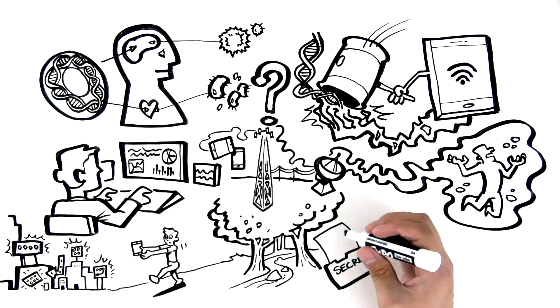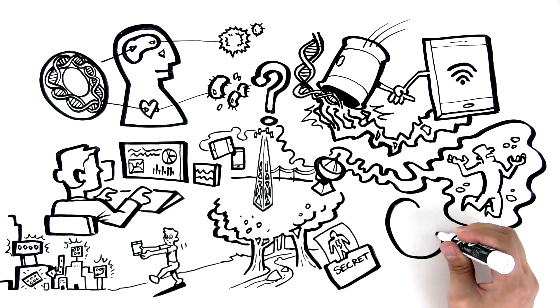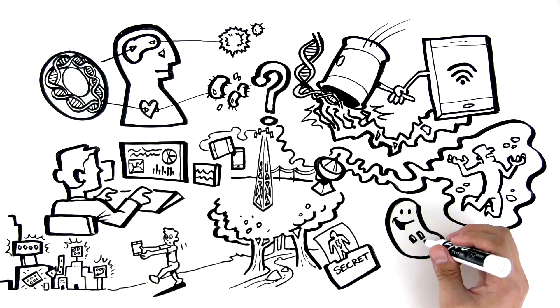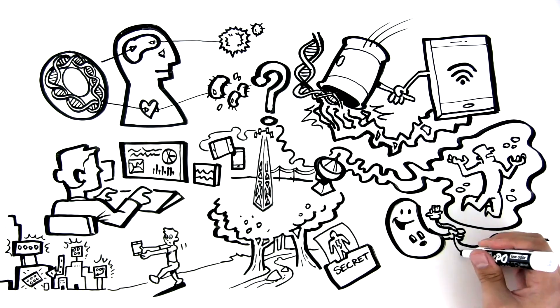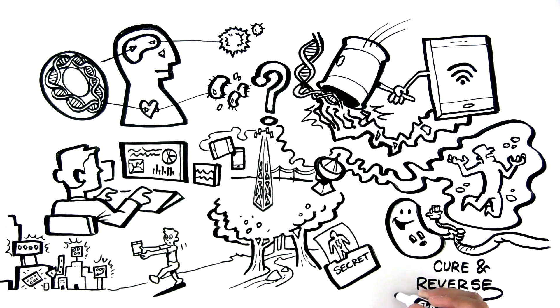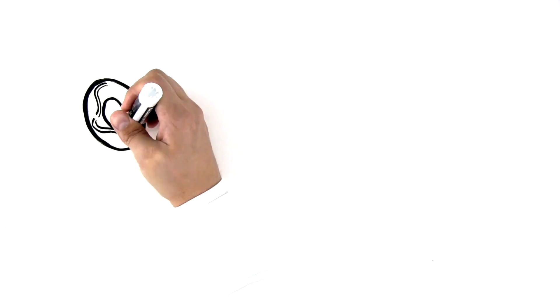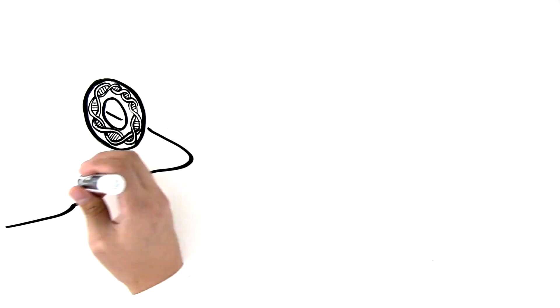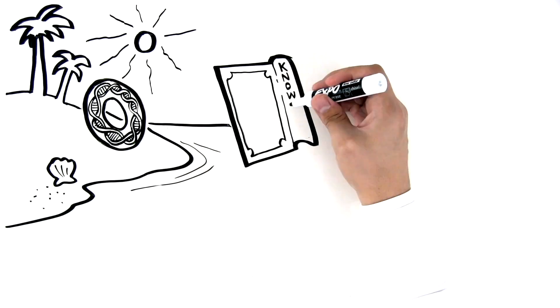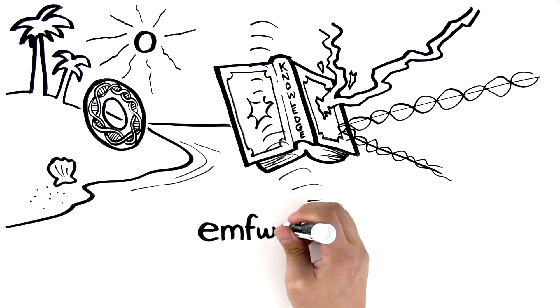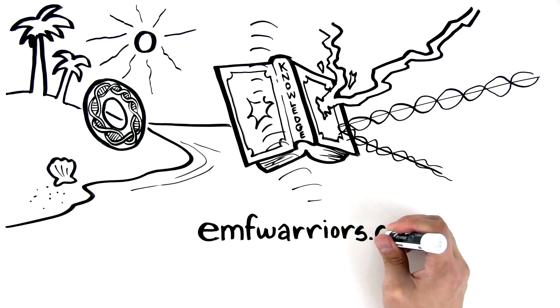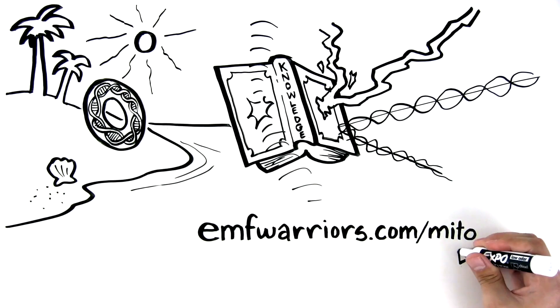The real secret to our health and longevity is understanding how energy is generated in us. It's time to focus our attention on the power plants in our cells if we are going to cure and reverse the explosion of chronic diseases. To learn more about mitochondrial DNA and the simple steps you can take to protect you and your family from modern disease visit www.emfwarriors.com/mito